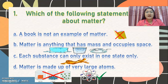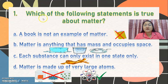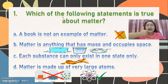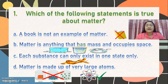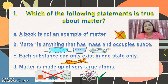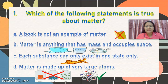Number one: which of the following statements is true about matter? Letter A, a book is not an example of matter. Letter B, matter is anything that has mass and occupies space — for example, solid, liquid, and gas. Letter C, each substance can only exist in one state only — so liquid can only be liquid, it cannot be solid or gas. Is that correct?